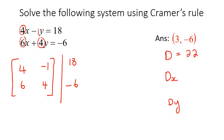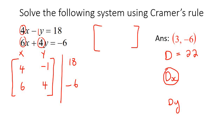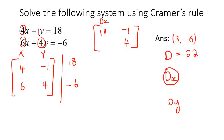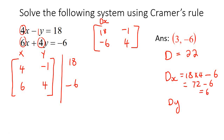This is where things get interesting. Remember that this column is your x's and this is your y's. To find Dx, you go to the x column, take it away, and replace it with the two constant numbers — 18 and negative 6 — from the right-hand side. Then you work out the determinant of that new matrix: 18 multiplied by 4, subtract negative 1 times negative 6, which is positive 6. That gives us 72 minus 6, which is 66. So Dx equals 66.